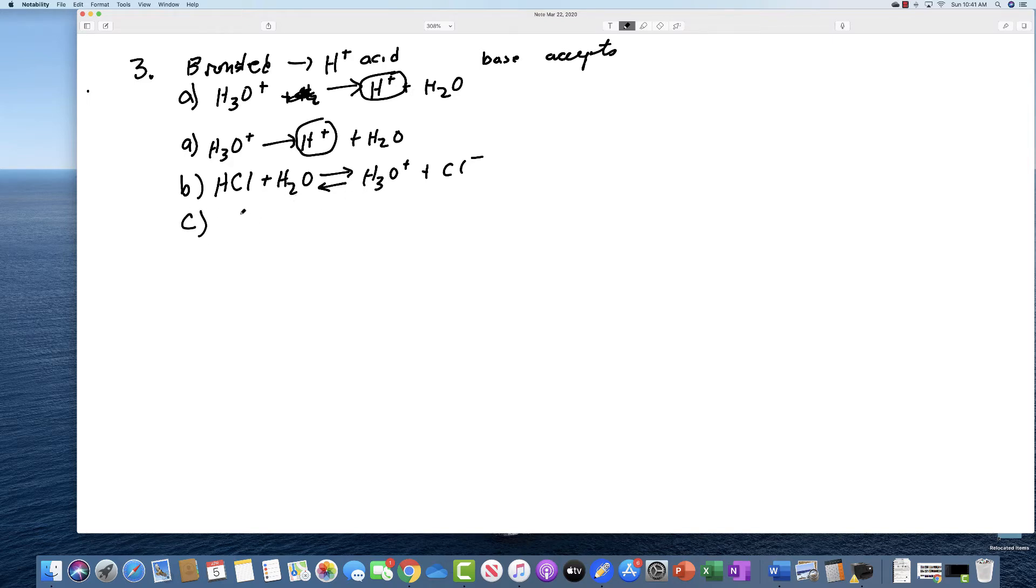C is NH3, and you could say that this goes to form H+, plus NH2-, or you could say that this is added to water to form the same H3O+, plus NH2-. Here you have the acid, the base, the conjugate acid, and the conjugate base.